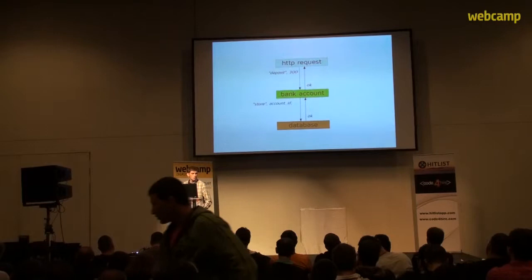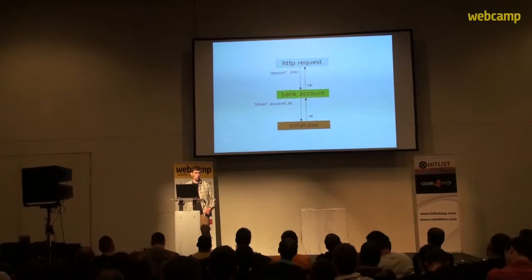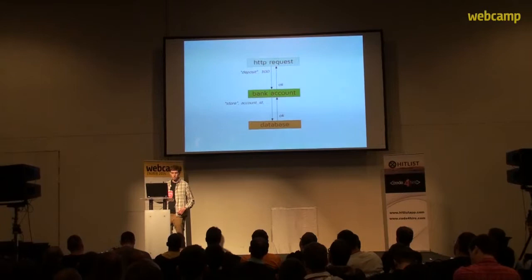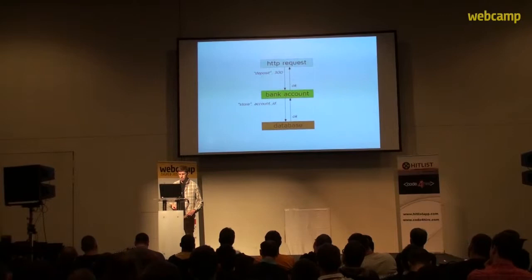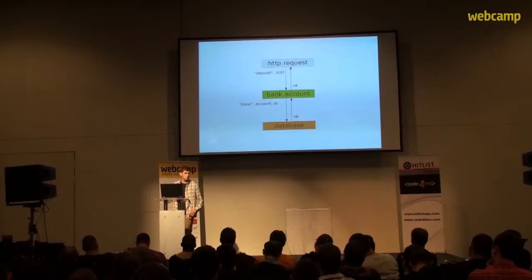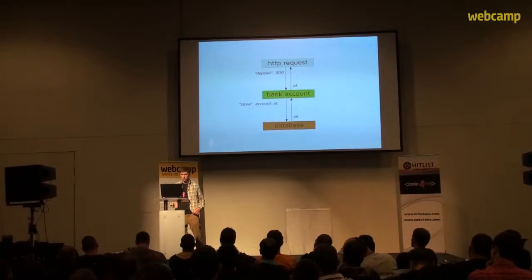When a message is received, an actor will handle it — process it by running some code, performing some computations, maybe talking to some other actors, maybe changing its state, maybe sending a response back. And this response is also sent back as a message. The message itself must be either a full deep copy or otherwise fully immutable, because we cannot allow sharing of mutable data between two actors — then the whole idea falls apart and we are back in the land of locks and critical sections.